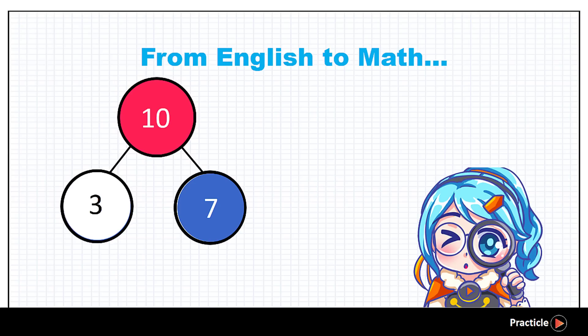And how do we translate this into a math subtraction sentence? To do that, we will start by writing the whole. So do you know what number to write? We started off with 10 ants, correct? So let's write the number 10.